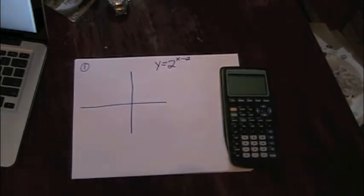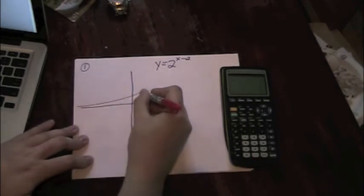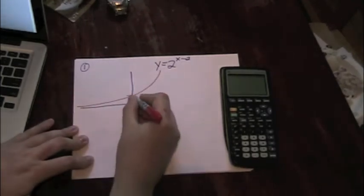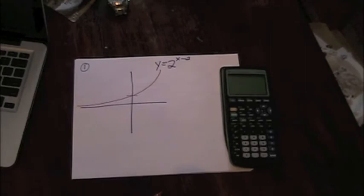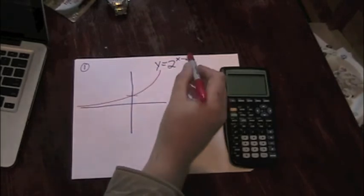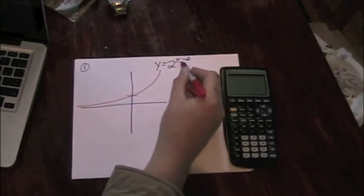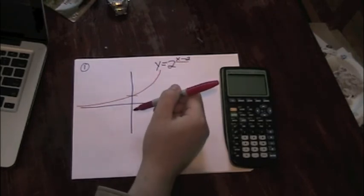We talked a lot about how the mother function for an exponential curve has an asymptote y equals 0, goes through the point 0 comma 1, and curves upwards to infinity in both the x and the y directions. If we take a look at how this exponential curve is different from the mother function curve, it's going to be based on that x minus 2 within the function part itself.